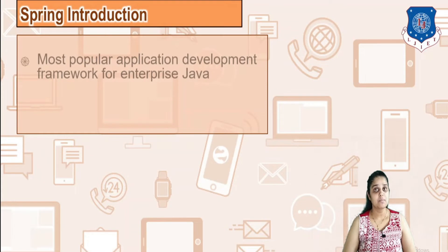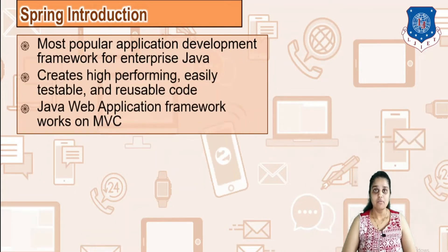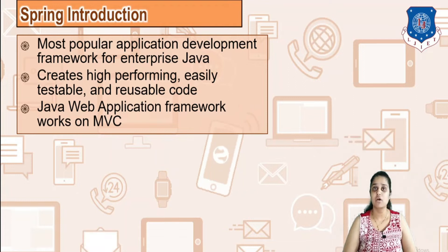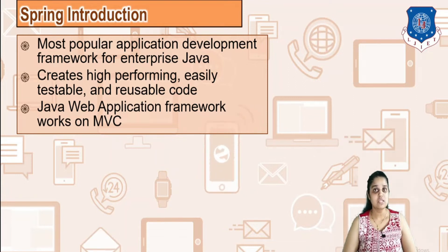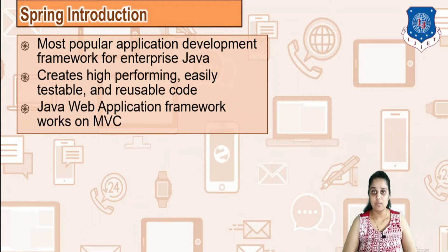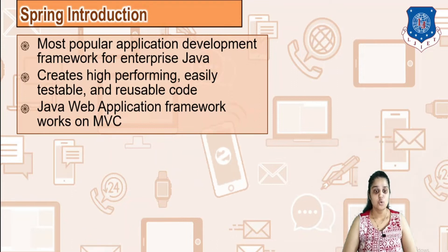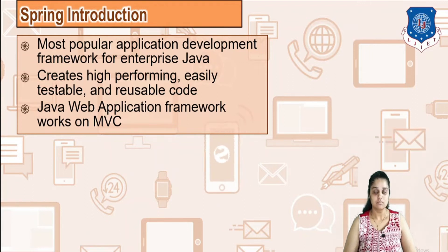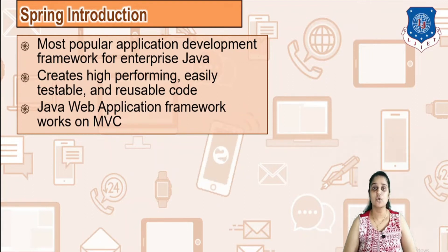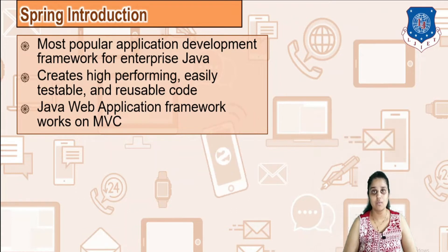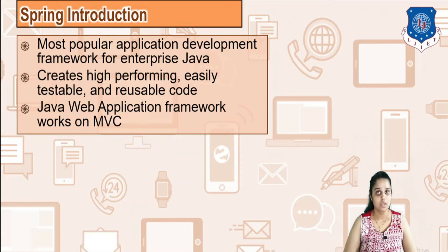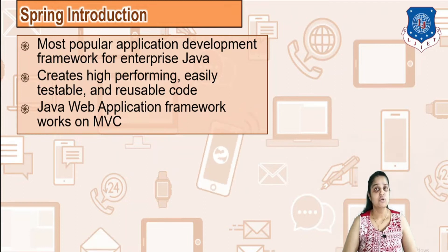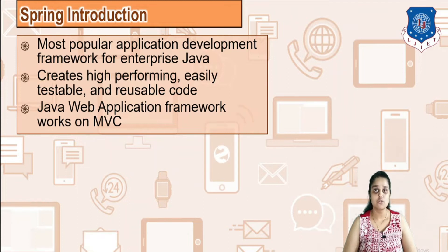We shall begin with the basic introduction of Spring. Whenever you have the word Spring, you have the MVC framework along with it. MVC is Model View Controller. Model is nothing but your bean file or your POJO file where you have getter setters. You have a controller which is nothing but a dispatcher servlet, and it routes your request from one place to another. And you have your view, which is the HTML page displayed as a response on the client browser.